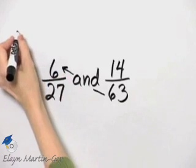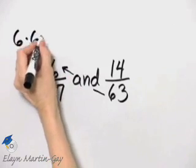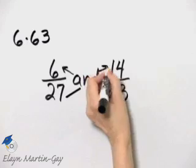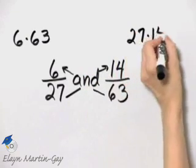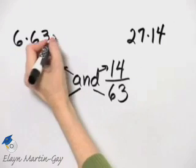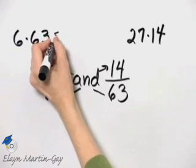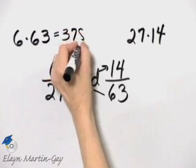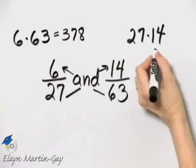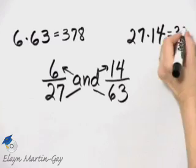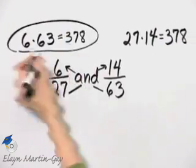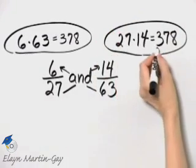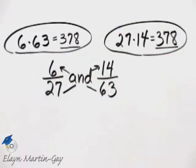This cross product is 6 times 63, and we will compare that with this cross product, which is 27 times 14. Now, 6 times 63 is 378, and 27 times 14 is also 378. Because these cross products are equal — because they both equal 378 — these fractions are equivalent.